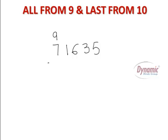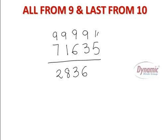9 minus 7 gives you 2, 9 minus 1 gives you 8, 9 minus 6 gives you 3, 9 minus 3 gives you 6 and 10 minus 5 gives you 5. So this is the complement of this number and this is the complement of this number. I hope it's very easy. You all must have understood how to find out the complements.